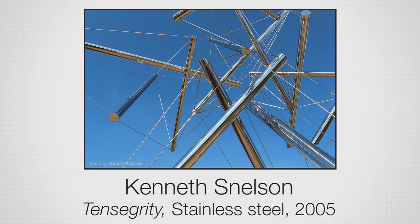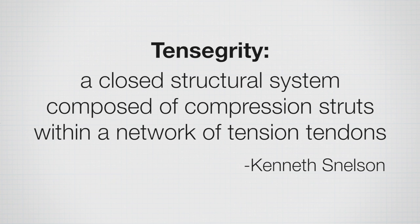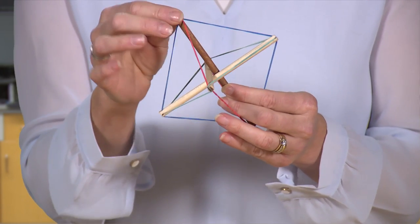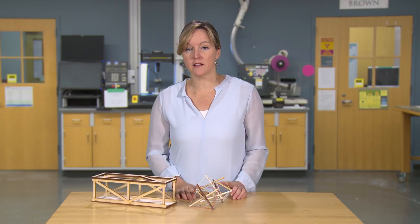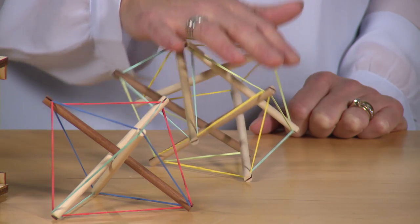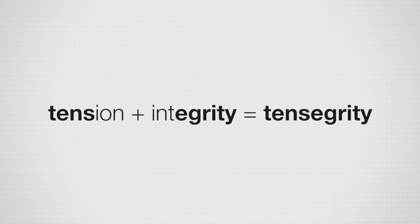Kenneth Snelson is a sculptor and one of the first to build tensegrity structures — actually sculptures. He defines tensegrity as a closed structural system composed of compression struts within a network of tension tendons. Here we have the compression struts and a network of tension tendons. Snelson also likes to describe his tensegrity sculptures as floating compression, which is a nice visual understanding of what's happening. The word tensegrity was coined by Buckminster Fuller in the 1960s by combining the words tension and integrity.